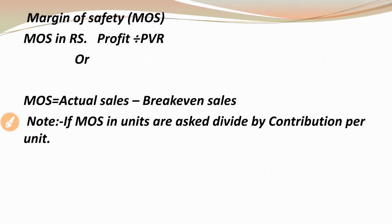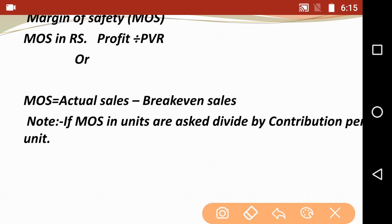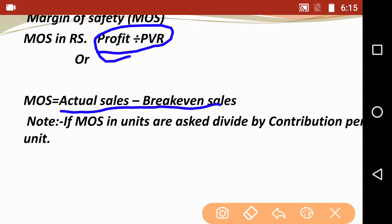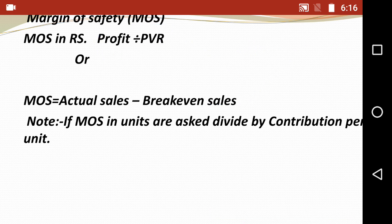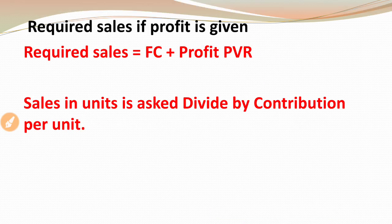Next is Margin of Safety, known as MOS. You can calculate it two ways: first, Profit divided by PVR; second, Actual Sales minus Break-Even Sales. Both formulas are equivalent. MOS equals Profit divided by PVR, or MOS equals Actual Sales minus Break-Even Sales. If MOS in units is asked, divide by Contribution per unit.